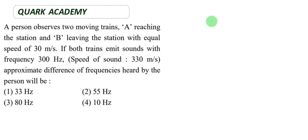In this question related to Doppler effect, one observer has come to a railway station. Train A is reaching the station, moving towards the observer. Train B is leaving from the station, moving away from the observer.